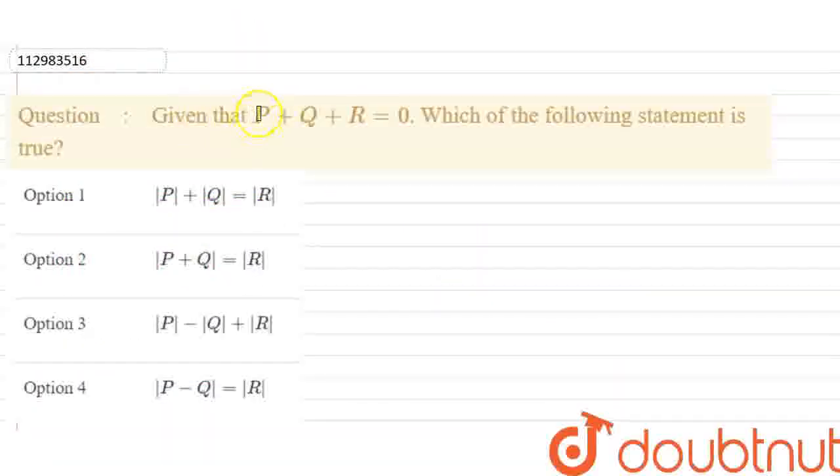We have three vectors given: P-vector, Q-vector and R-vector. The sum of those are zero. We have a question about which statement is true. We have a question about mathematical proof.